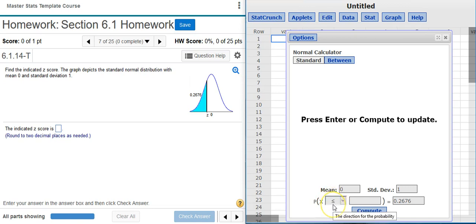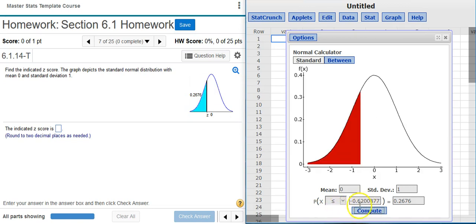This is what we want, less than or equal to, because this is like an arrow pointing in the direction that we want. And that's the direction that we want, the area to the left. So we leave that alone. We press Compute, and out comes our z-score.